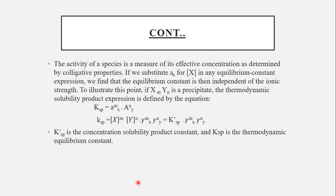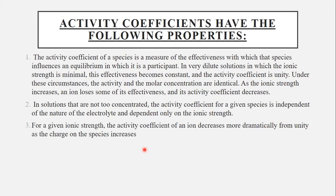If we substitute a_X for X in any equilibrium constant expression, we find that the equilibrium constant is then independent of the ion strength. To illustrate the point, if XM and YN is precipitate, the thermodynamic solubility product expression is defined by the equation. The K_SP is a concentration solubility product constant and K°_SP is a thermodynamic equilibrium constant activity.